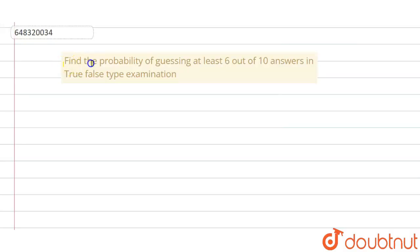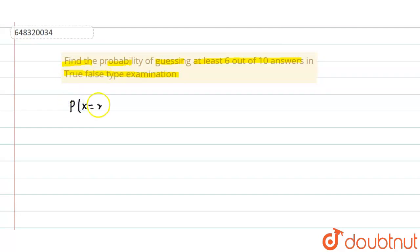Given that, find the probability of guessing at least 6 out of 10 answers in a true-false type examination. So it follows binomial distribution. We know for binomial distribution, probability of X equals to x is nCx, p to the power x, q to the power n minus x.